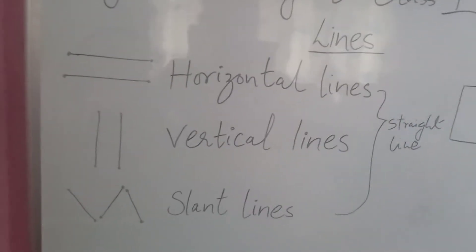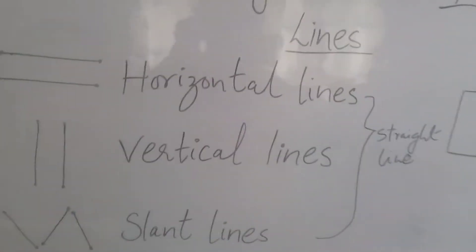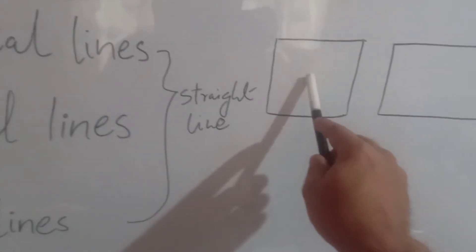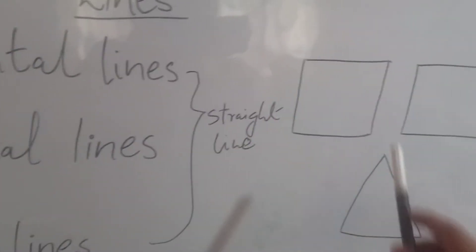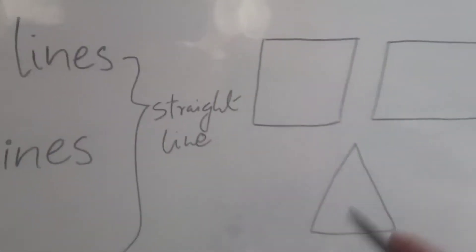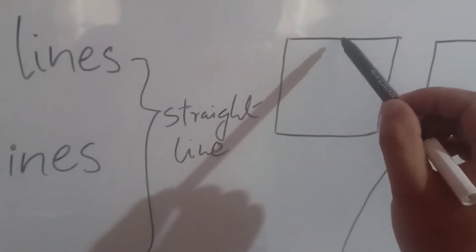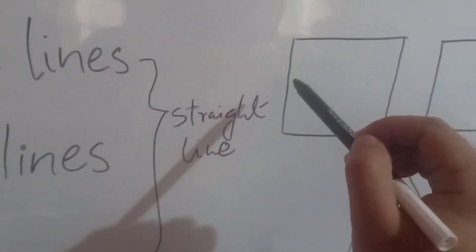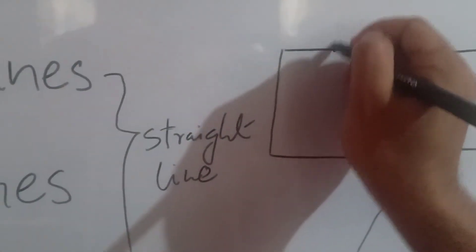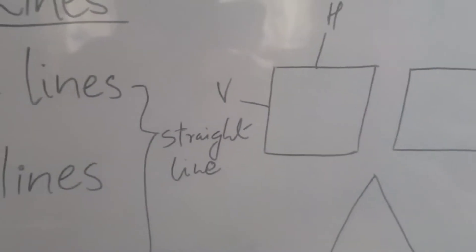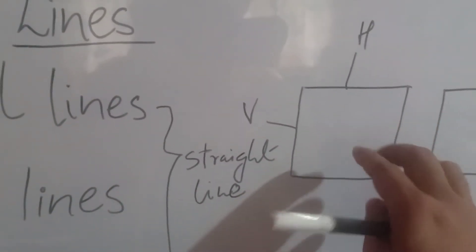We use lines to make different shapes. If you can see over here, there are different shapes like a square, rectangle, and triangle — all of these are created by connecting lines. In a square shape you will find a horizontal line as well as a vertical line.